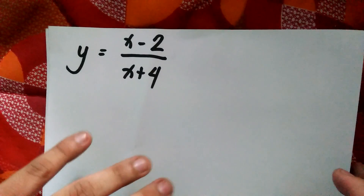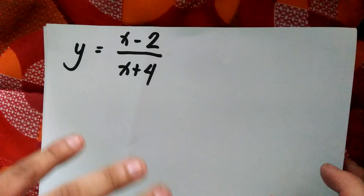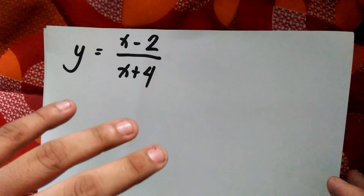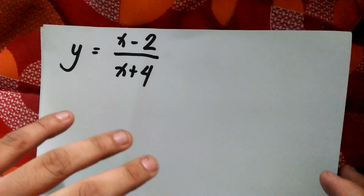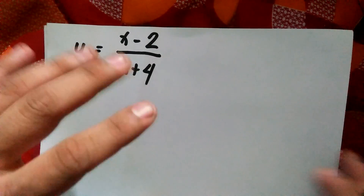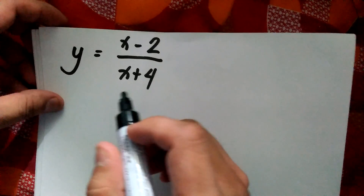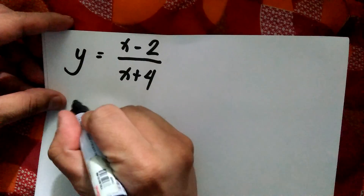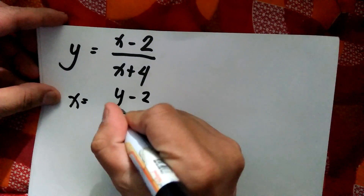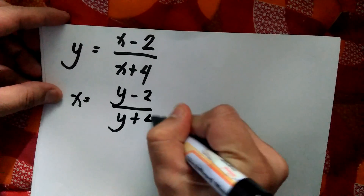How do we get the inverse of a function? The first thing is we change x and y — we do the interchanging. So this will be x equals y minus 2 over y plus 4.